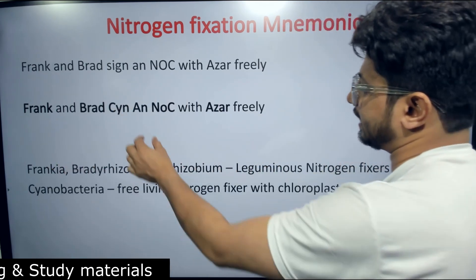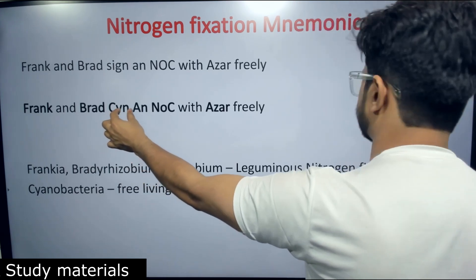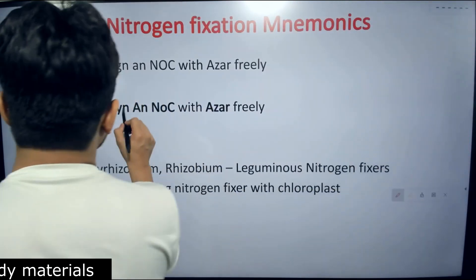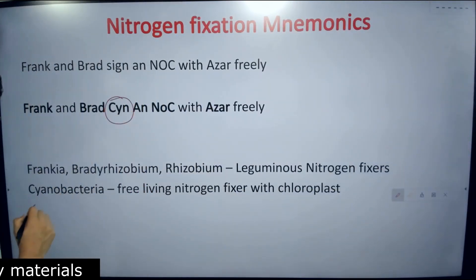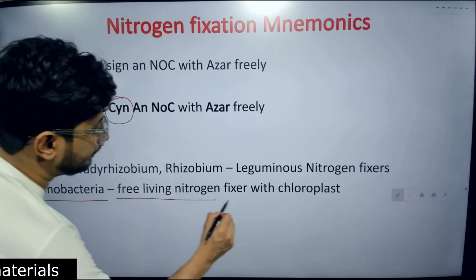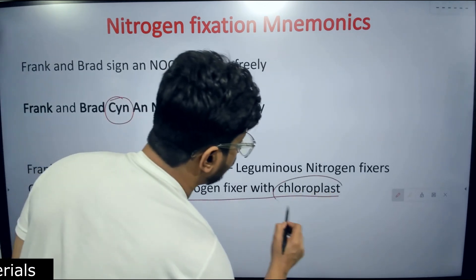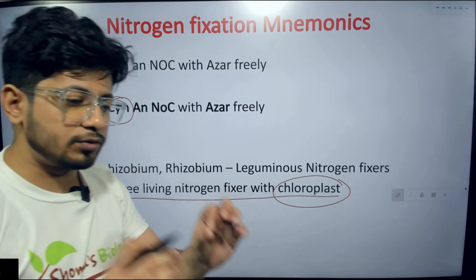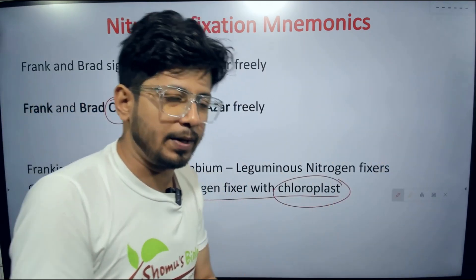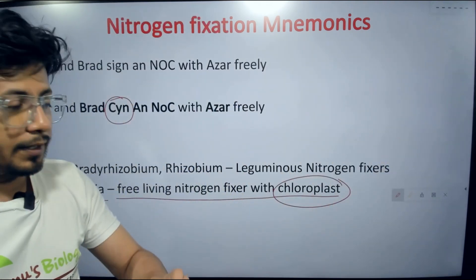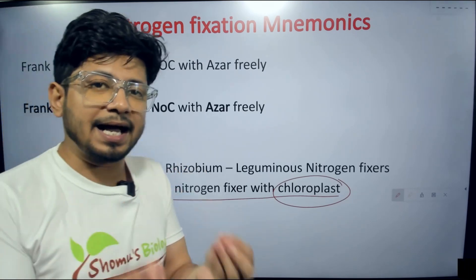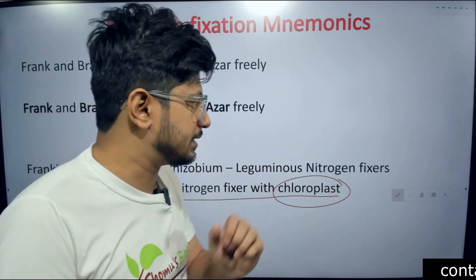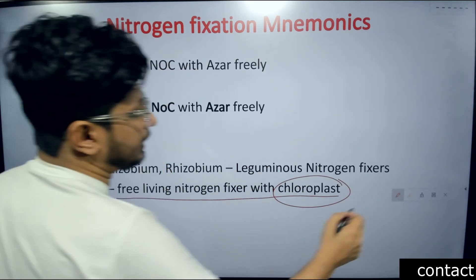The next part is regarding 'Syn'. Syn stands for Cyanobacteria — a free-living nitrogen fixer that also has a chloroplast in it. Because Cyanobacteria has a chloroplast, it can also do photosynthesis. So the Syn part representing Cyanobacteria, a free-living photosynthetic nitrogen fixer, is done.